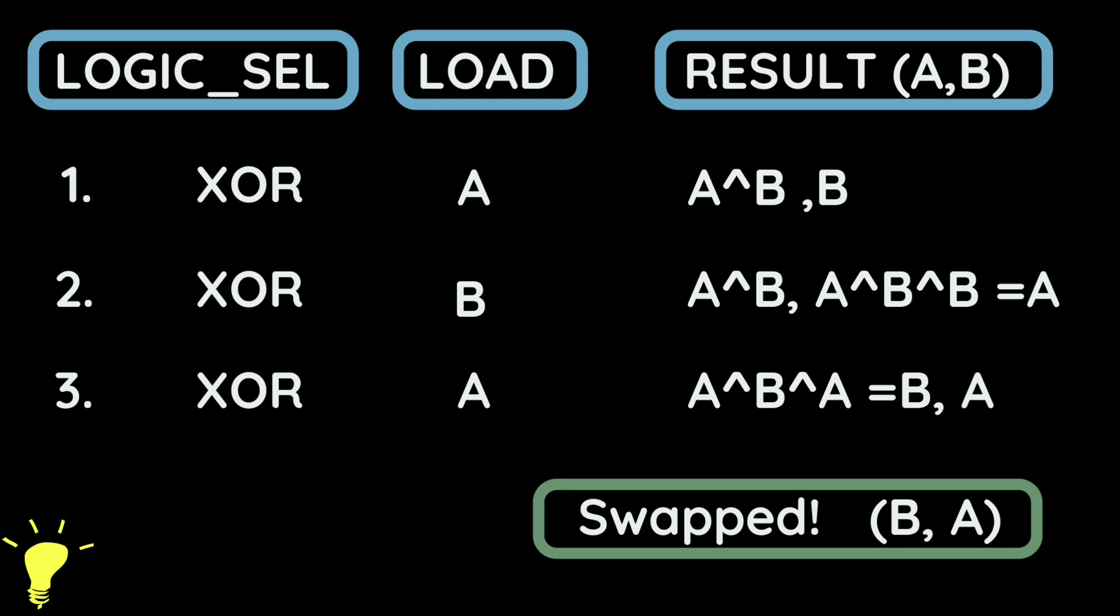This is how we swap the data from A register to B register using XOR gate in three cycles. If you have any other ways, please comment down below. It will be helpful for others.